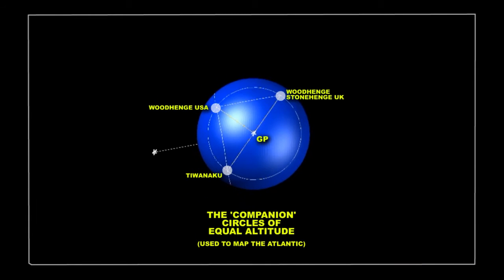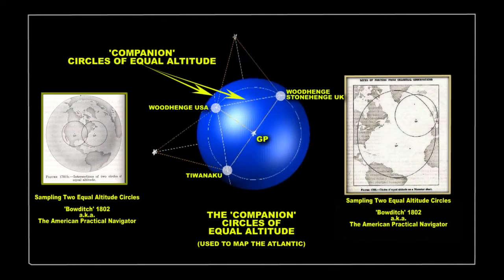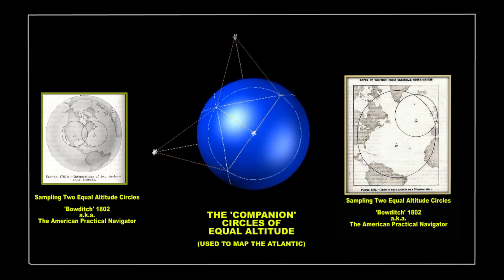However, to further aid in the angular mapping process, other companion circles of equal altitude, which in this particular case are ingeniously incorporated into the parent baseline as geometrical equals,